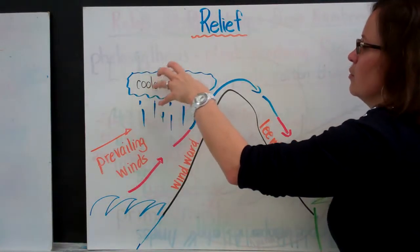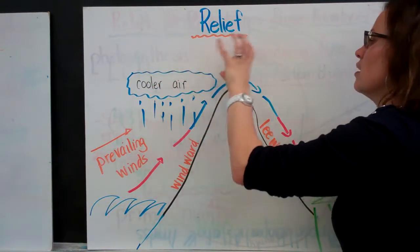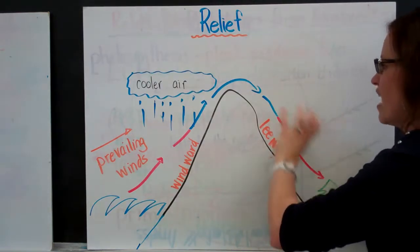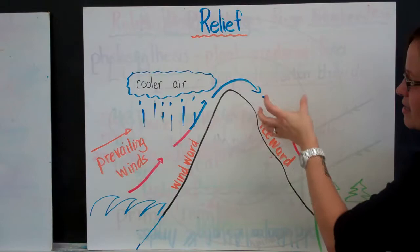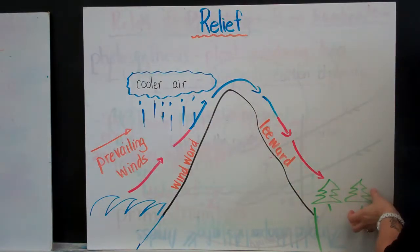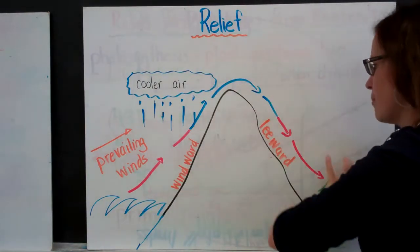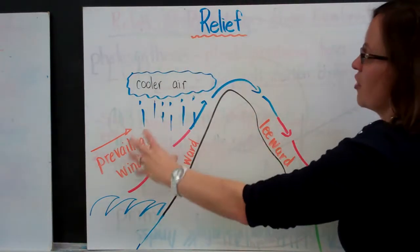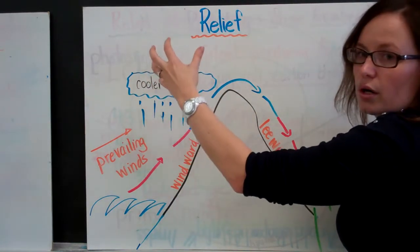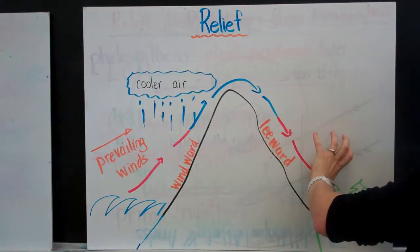As the air mass moves over the mountain and it starts to come down, those molecules start to come closer together. The air becomes more dense and it's able to contain more heat. So we have that change in temperature, but we also have that release of precipitation. So on this side, it is warmer, wet air, and on this side it's drier.